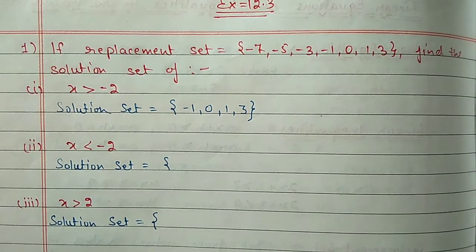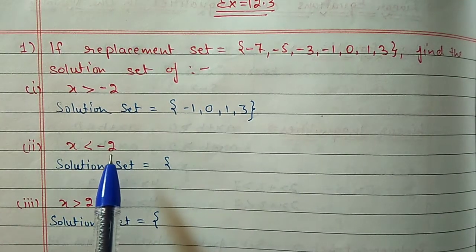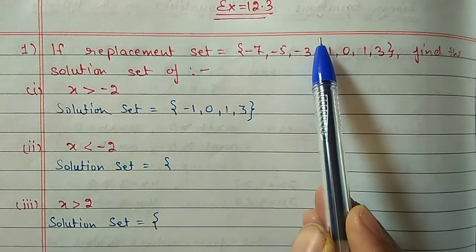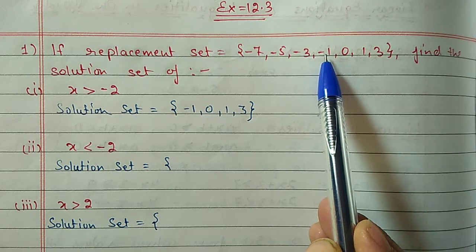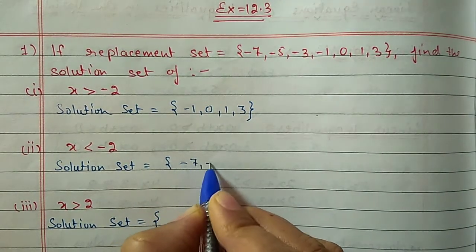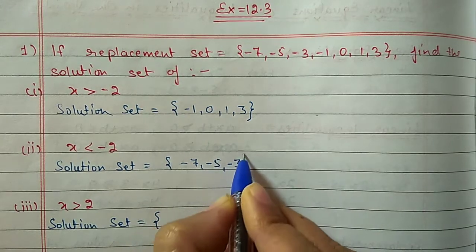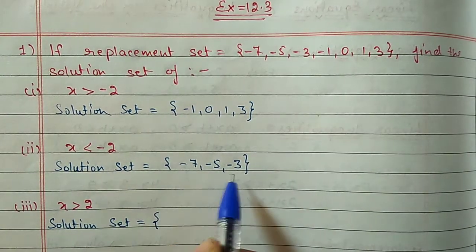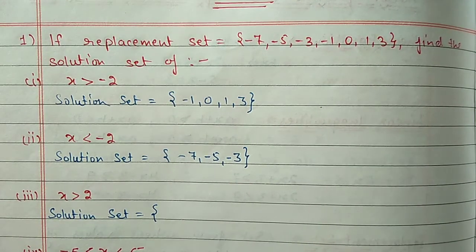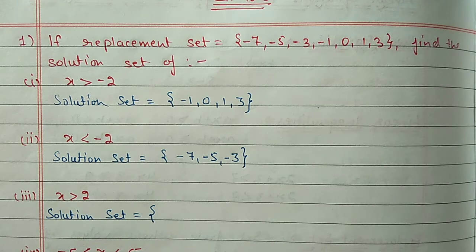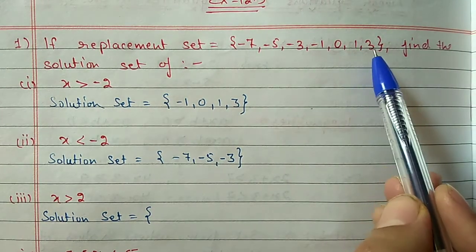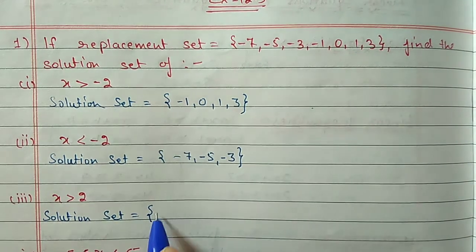Second part: x less than minus 2. We look at integers to the left of minus 2. Minus 2 is between minus 3 and minus 1, so left side gives us minus 7, minus 5, and minus 3. Solution set is {-7, -5, -3}. Third part: x greater than 2. Right side of 2 — since 2 lies between 1 and 3 — only 3 qualifies. Solution set is {3}.